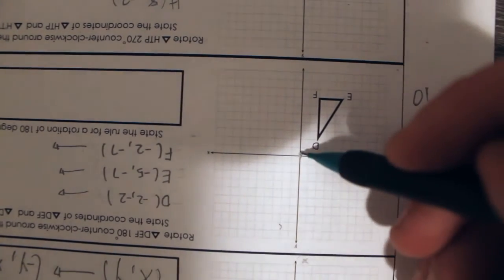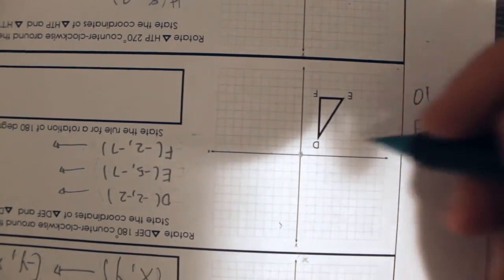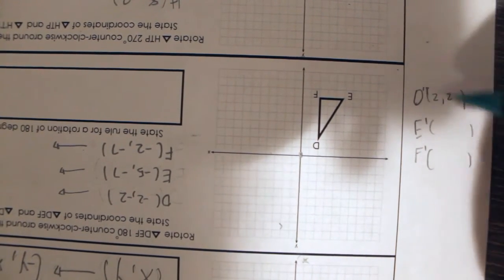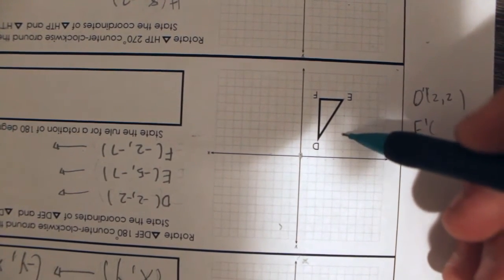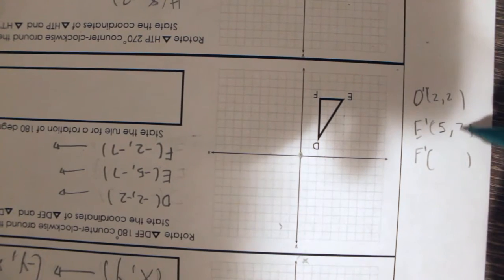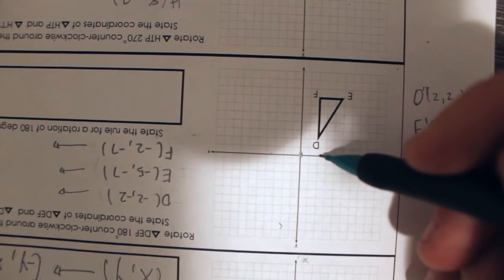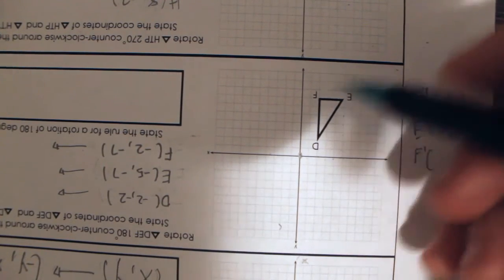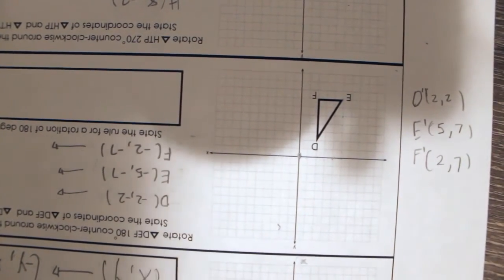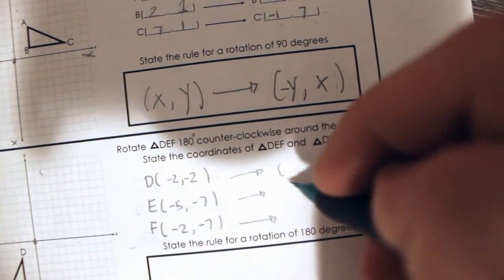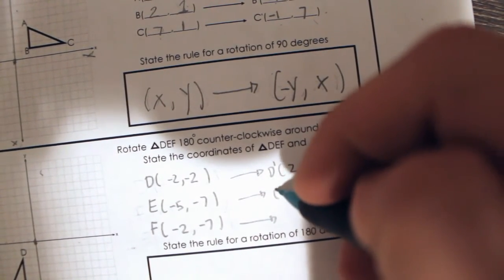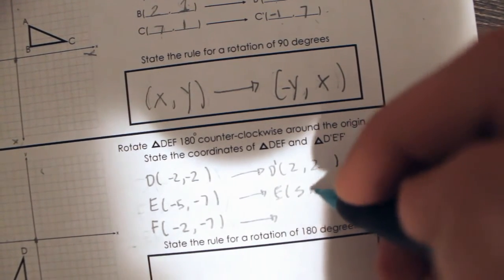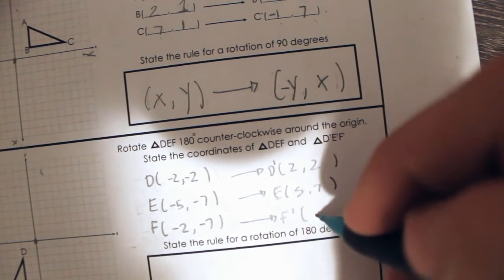D' became positive 2, positive 2. E' became positive 5, positive 7. And F' became positive 2, 7. Turning it back and copying our coordinates: D' is (2, 2), E' is (5, 7), and F' is (2, 7).